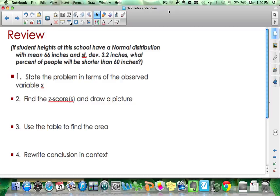This problem says if student heights at this school have a normal distribution with mean 66 inches and standard deviation of 3.2 inches, what percent of people will be shorter than 60 inches? Please pause the video, solve this. You can work together if you need to. Give students between 5 and 10 minutes.